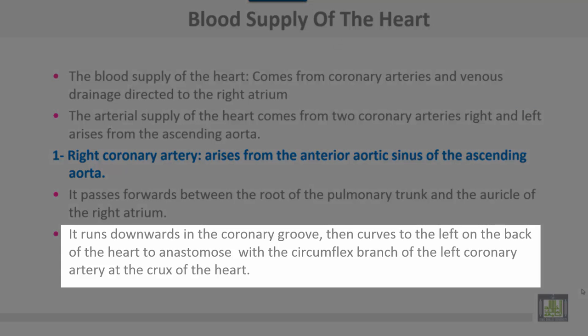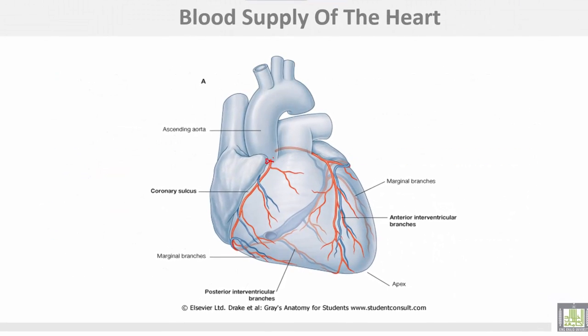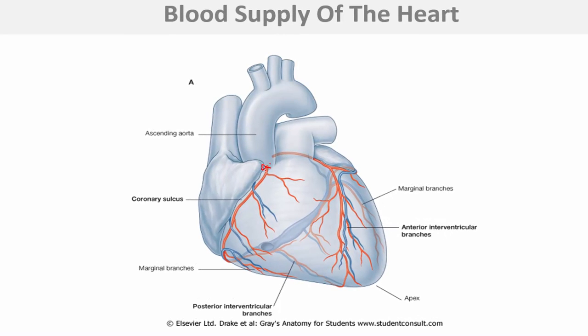It runs downwards in the coronary groove, then curves to the left on the back of the heart to anastomose with the circumflex branch of the left coronary artery at the crux of the heart. This is the right coronary, which arises from the anterior aortic sinus.